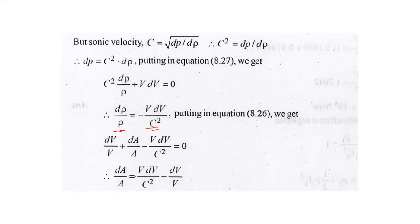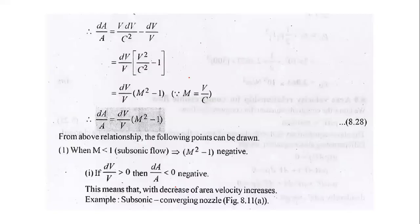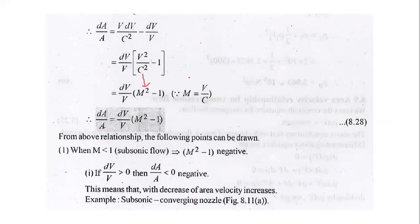Rearranging: dA/A = V·dV/c² − dV/V. Taking dV/V as common factor: dA/A = (dV/V)·(V²/c² − 1). Since V/c is the Mach number M, we get the final area-velocity relationship: dA/A = (dV/V)·(M² − 1).